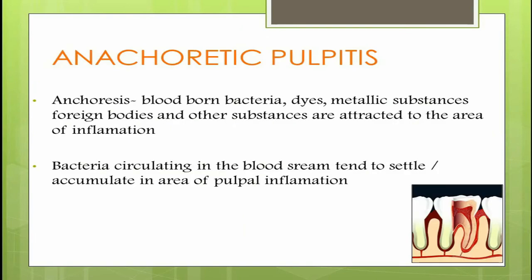What is anachorosis? It is a phenomenon by which blood-borne bacteria, dyes, pigments, metallic substances, foreign proteins and other materials are attracted to the site of inflammation. The bacteria circulating in the bloodstream tend to settle out or accumulate at the site of pulpal inflammation. This pulpal inflammation could be due to some chemical or a mechanical injury, which could either be a transient injury or a chronic low-grade inflammation.